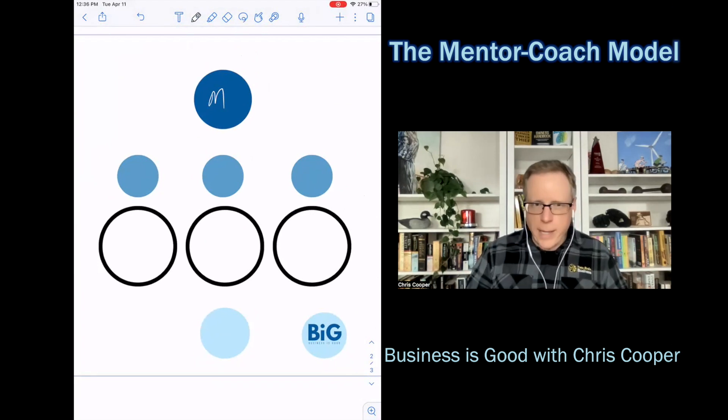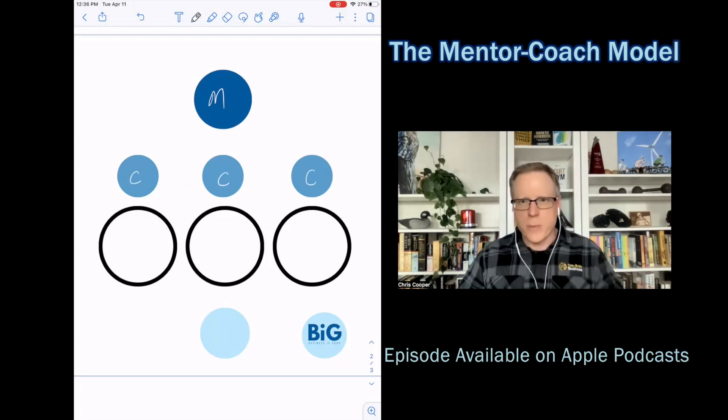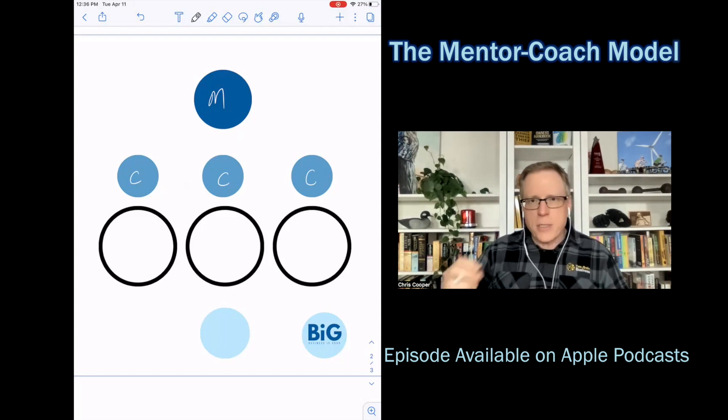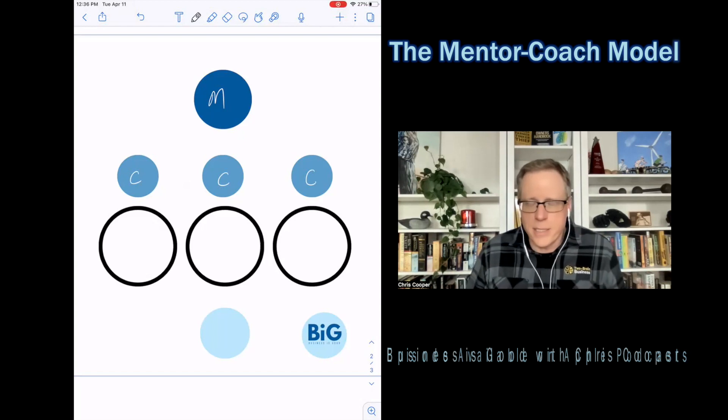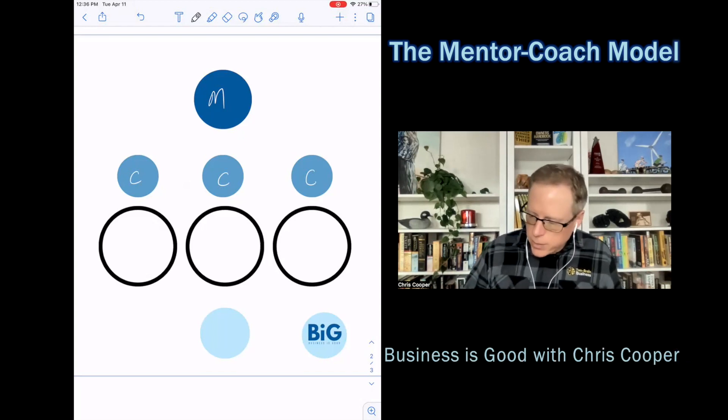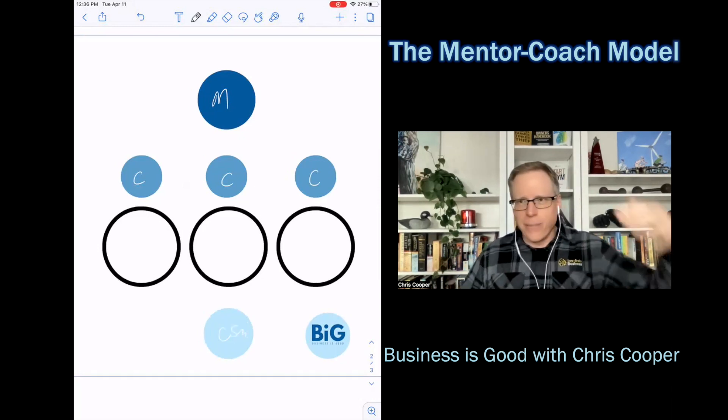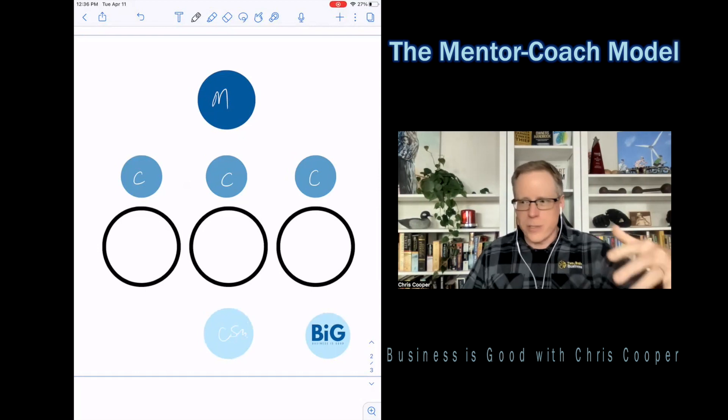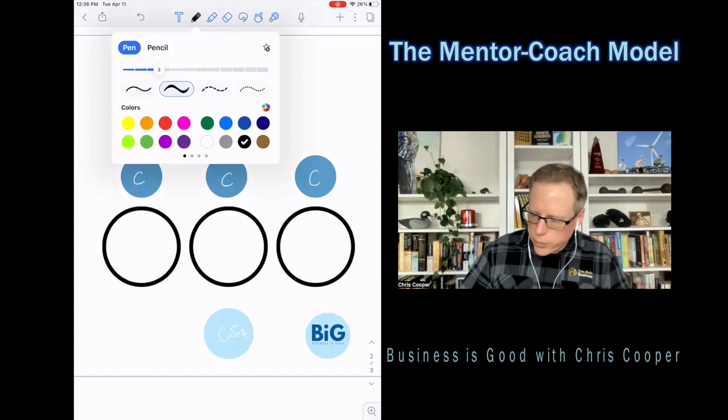But working with that mentor, you have coaches. Now a coach's job is to be a specialist. And I'll get more specific here in a moment. Their job is to activate the client. So the mentor will work on the plan with the client and the coach's job is to make sure the client does it. And then down here, you have a concierge role. So I'm going to call that a CSM. Now this is not a hierarchy. It's not that the mentor is smarter than the coaches or smarter than the CSM. It's just that their jobs are completely different. And I'm going to define what they each mean for you.